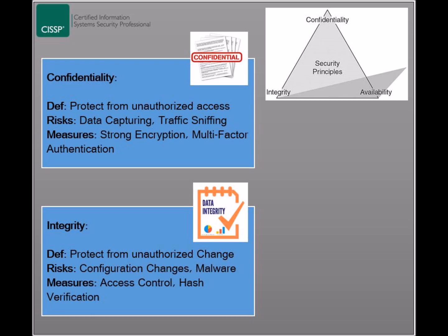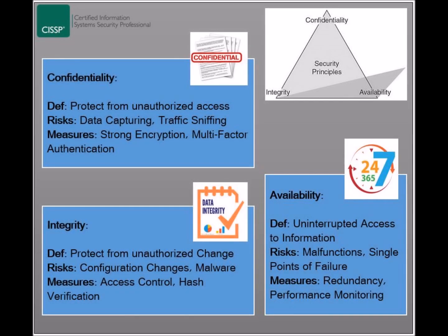This means that information has not been changed during its states of storage, process, or transit. Risks affecting integrity include unauthorized modification of data — accidentally or intentionally — uncontrolled configuration changes, or malware infections such as viruses. Measures to protect data integrity include logging and monitoring, access control, and hash verifications.